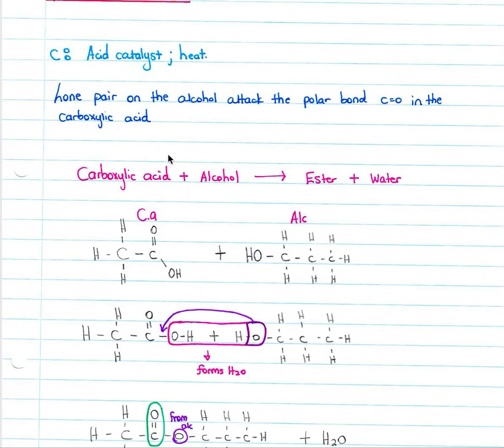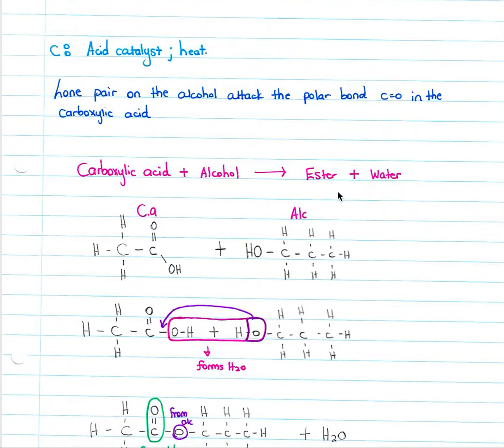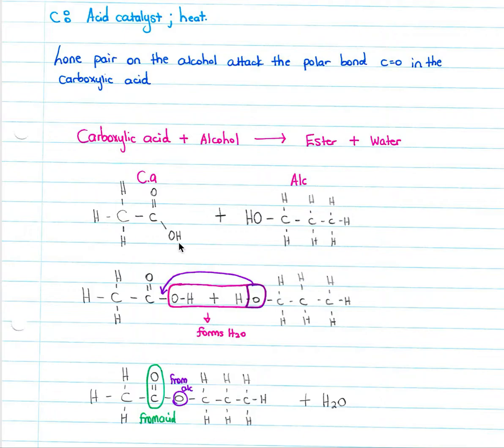So if we have a carboxylic acid as we have over here and an alcohol as we have over here, we will form an ester and water as our second product. We can see our C with our double bond oxygen over here and our alcohol over here.